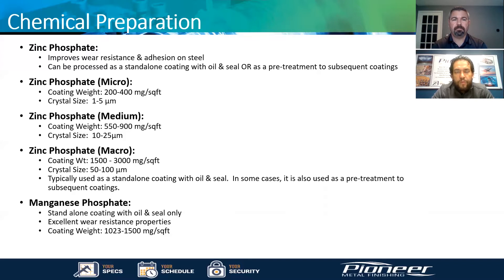The micro zinc phosphate has a crystal size of 1 to 5 microns. This is the most common phosphate used for bonding rubber into steel surfaces. The reason is that the crystal size is small and the deposit is not as big, which creates an ideal situation for bonding.